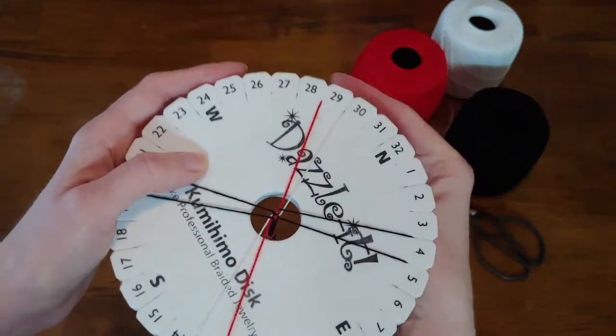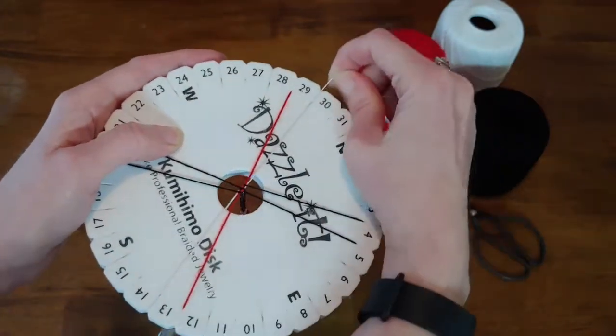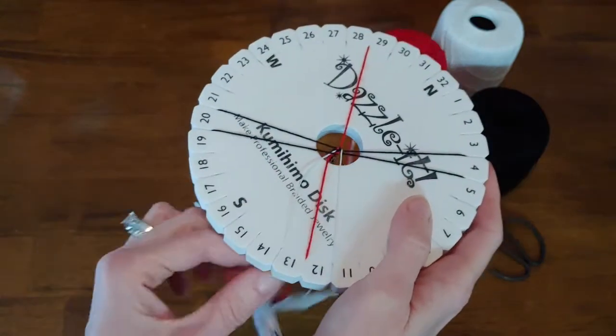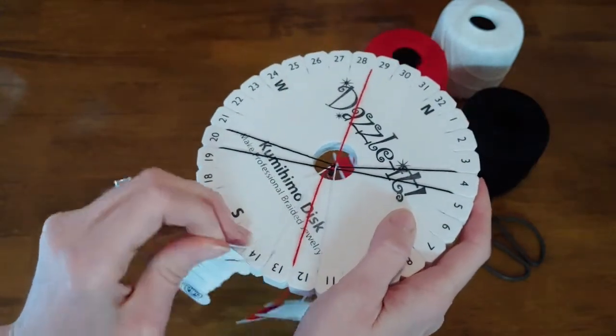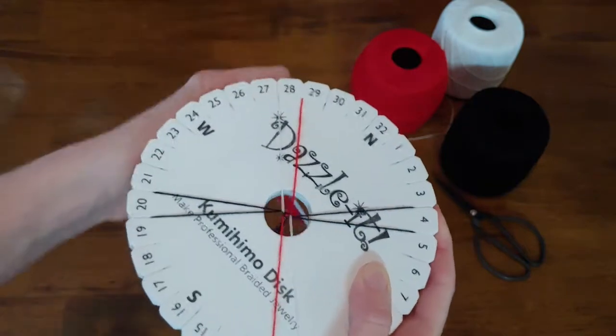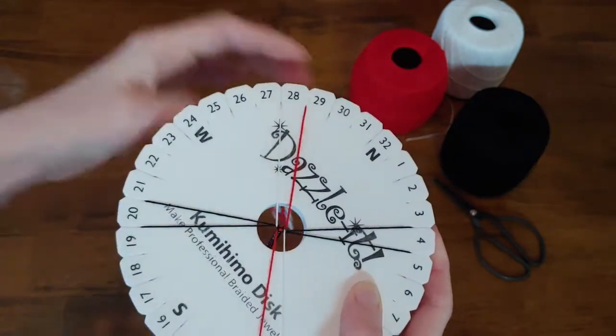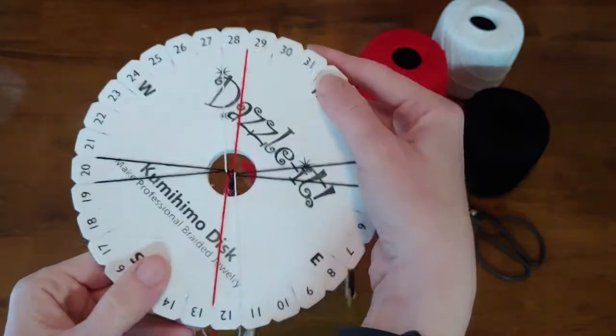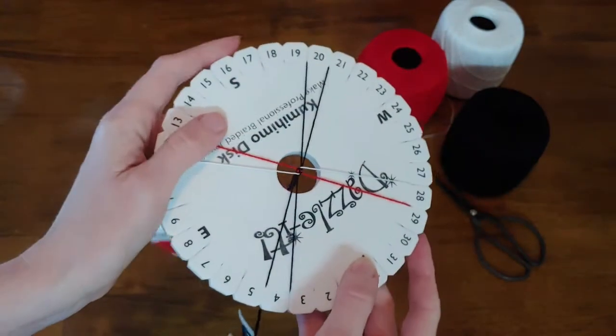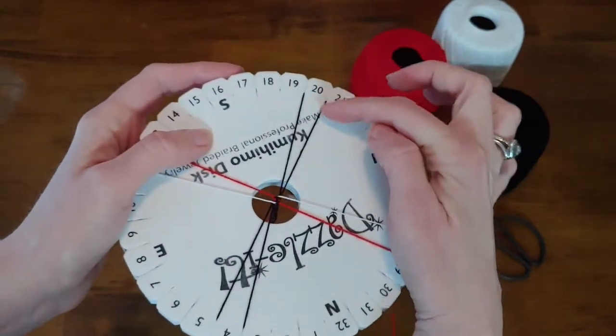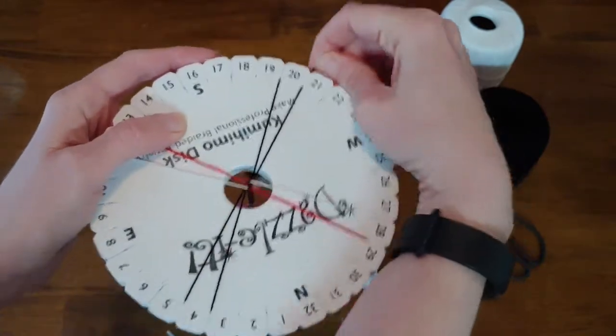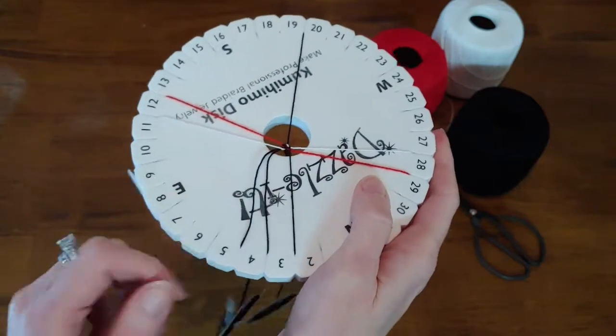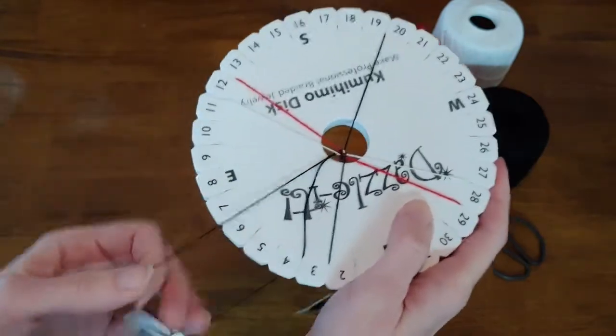So now I'm going to do my top right, which is white, and pull it down. And now I'm going to do my bottom left, which is also white, and put it up and pull my strings tight. And now I'm going to do a quarter turn again. And my top right string goes down, and then this bottom left string goes up. And as I said before...